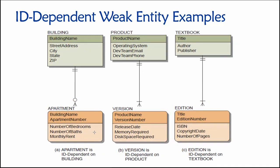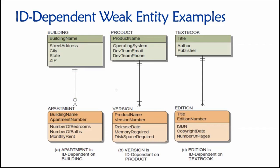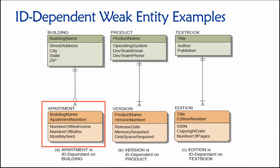Back to the notion of ID dependence — we're focused on the weak entity, which in this case is an apartment. An apartment is a self-contained room or set of rooms within a larger building that serves as a housing unit. For an apartment to exist in the real world, it must be part of a larger building. It's possible for a building to exist without any apartments, but it is not possible for an apartment to exist without an associated building.